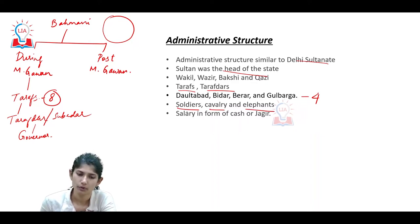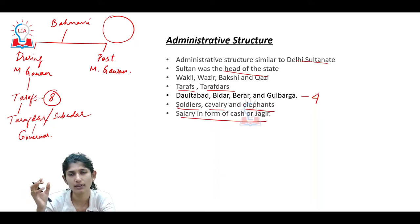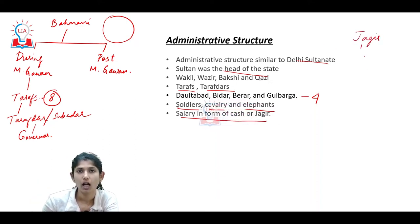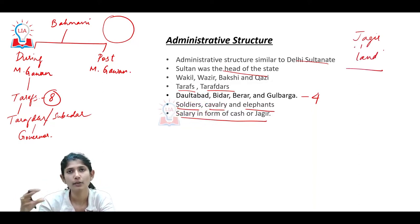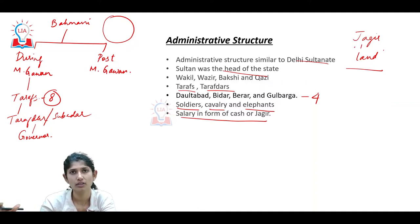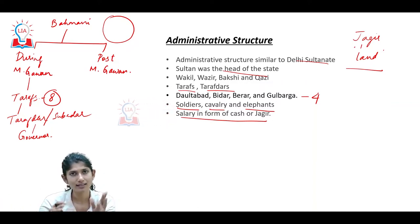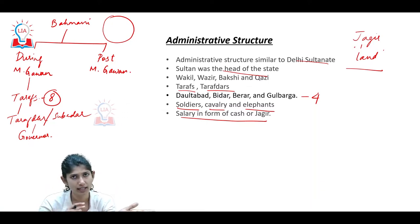One more important thing: salary was paid in the form of cash or jagir. A jagir is nothing but an allotment - a piece of land given to a person instead of cash. So salary was given in both ways: in the form of cash and also in the form of jagir, or gifting of land.